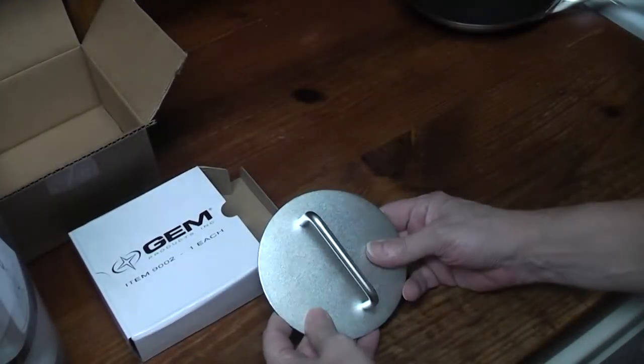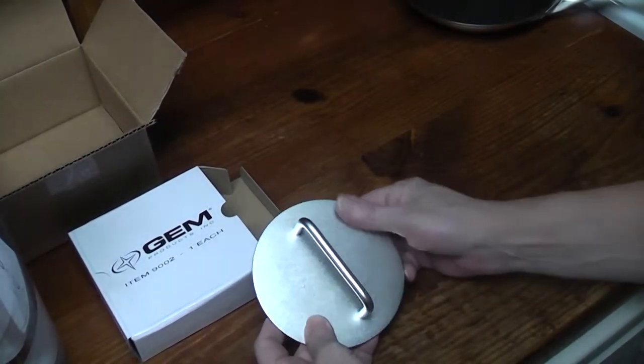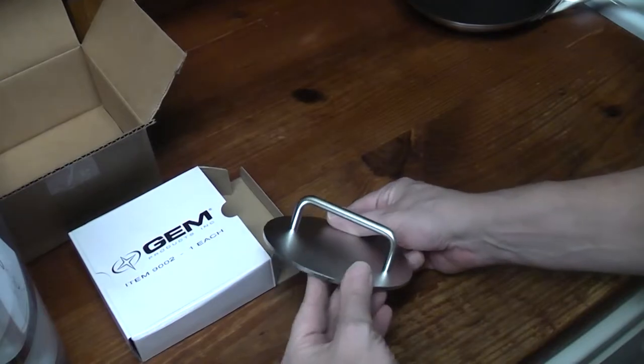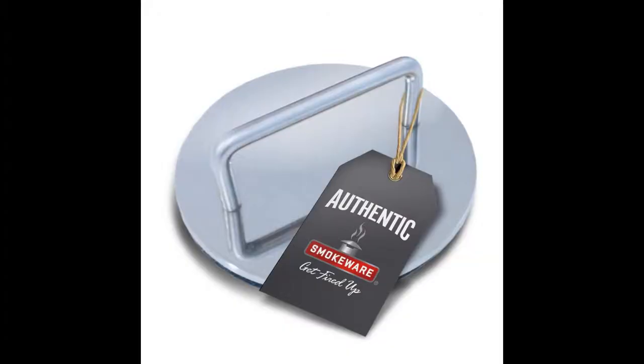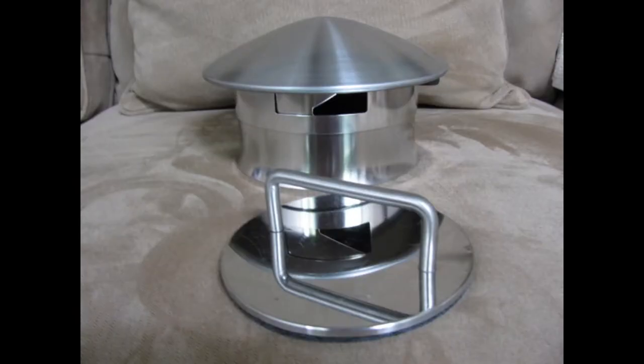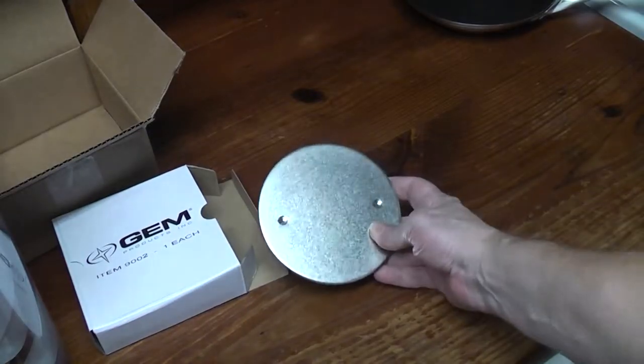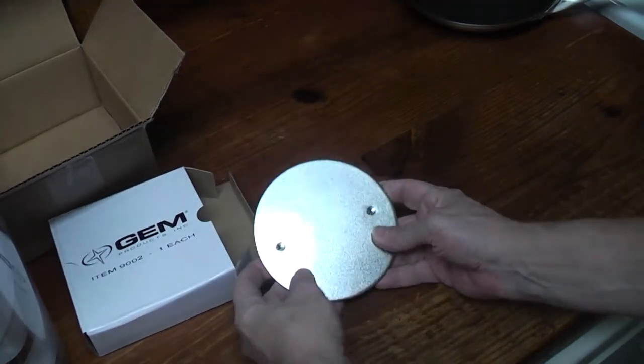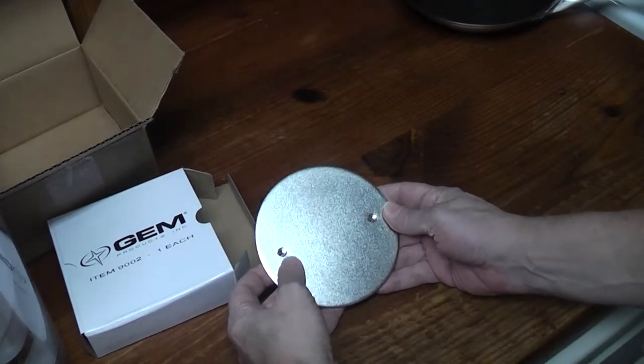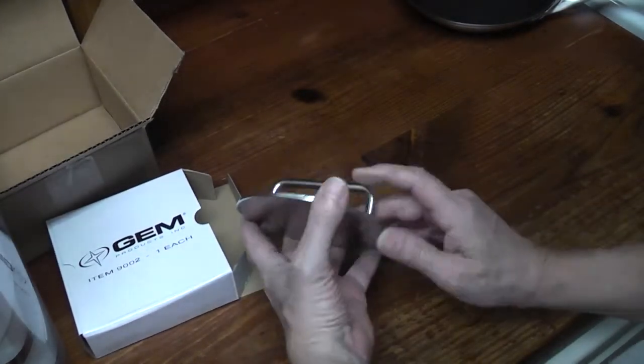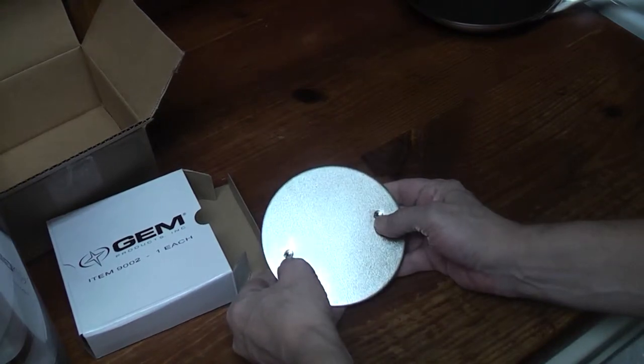The first thing I notice is that it is not highly polished like it is in the pictures online. Online you can clearly see a reflection of the handle in it. I prefer the texture because I think the burger will be less apt to stick to it versus a perfectly smooth surface.